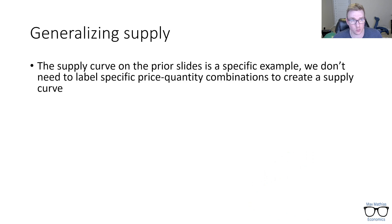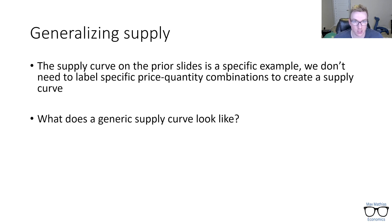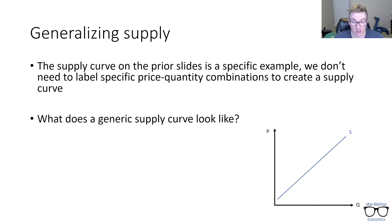Let's generalize this. We don't need to label every specific price-quantity combo to create a supply curve. A generic supply curve has our axes — P for price, Q for quantity — and you draw a line and label it S for supply. This is drawn as a straight line, though it doesn't have to be. A lot of times it's just simpler to draw a straight line.